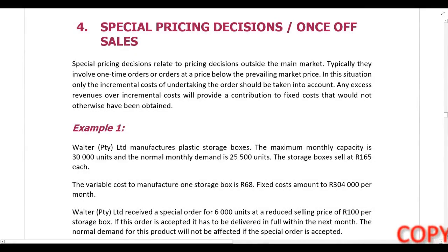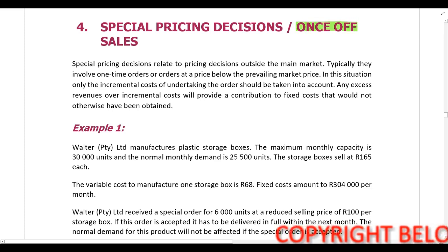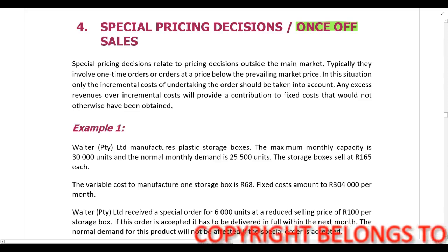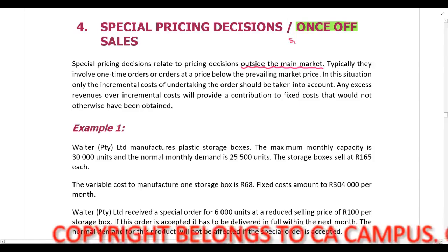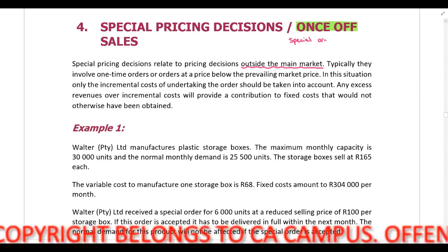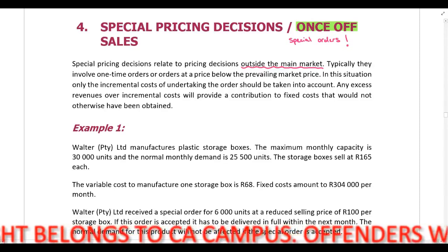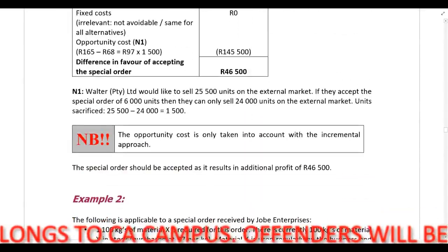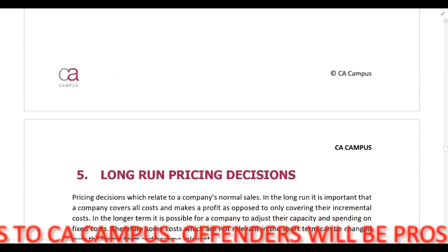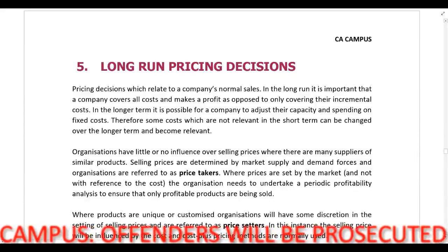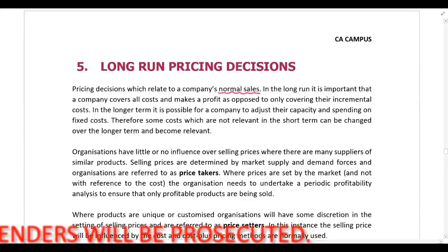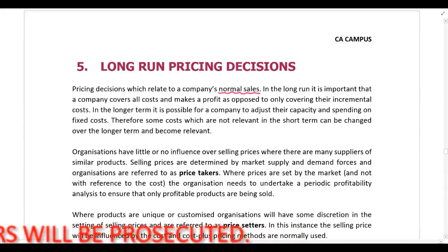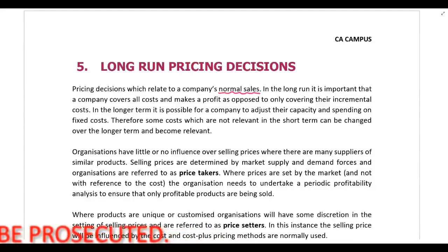The next type of decision-making scenario is special pricing decisions or once-off sales. These are normally special orders — sales that are outside the company's main market, not normal sales. This isn't to be confused with the next section on long-run pricing decisions, which deals with the company's normal sales. Pricing is very different for a once-off sale versus a normal sale.